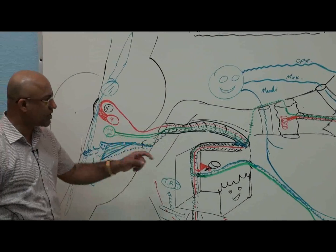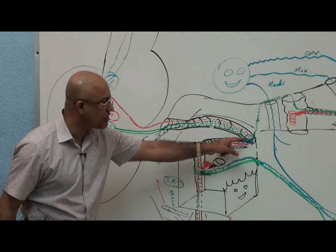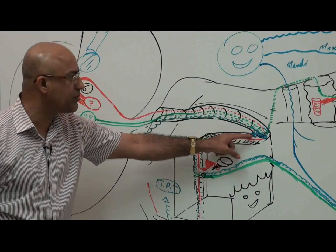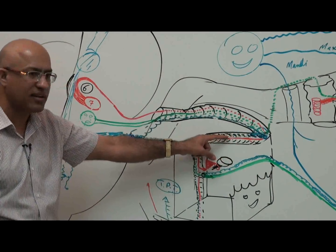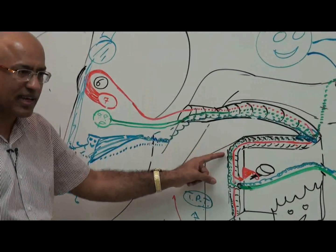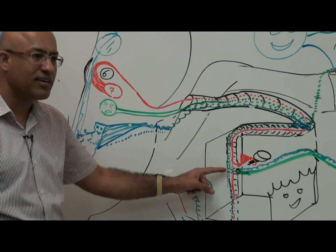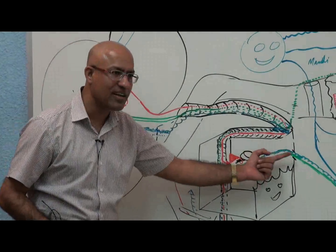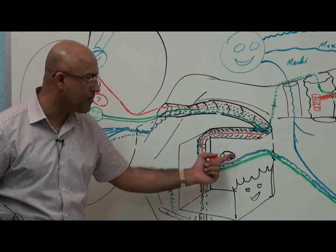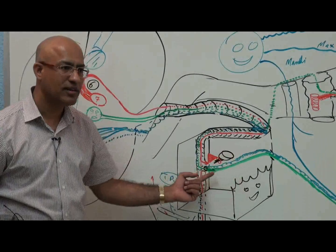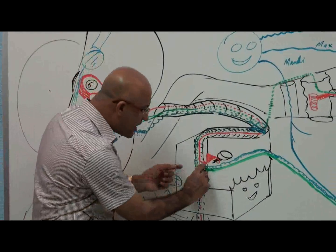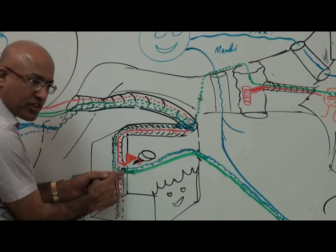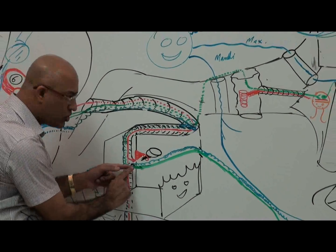Salivatory fibers separate from the lacrimatory pathway at the geniculate ganglion. They move with the facial nerve proper into the facial canal — backward then downward — but from there, through the posterior canaliculus, they jump into the middle ear. They carry taste fibers with them. This jumping nerve — the nerve crossing the tympanic cavity — is called the chorda tympani.